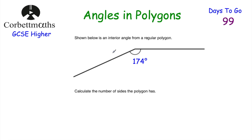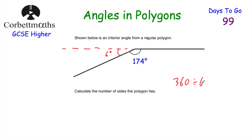Our last question: shown below is one interior angle of a regular polygon measuring 174 degrees. Calculate the number of sides. First, find the exterior angle: 180 subtract 174 equals 6 degrees. All exterior angles must add to 360 degrees, so 360 divided by 6 equals 60. There are 60 exterior angles, which means there are 60 sides. So this regular polygon has 60 sides.